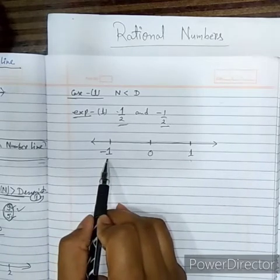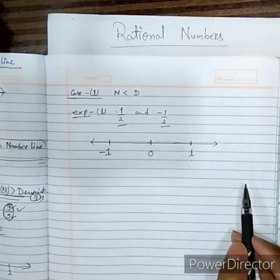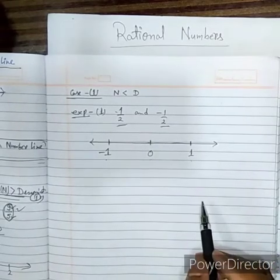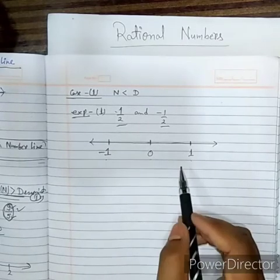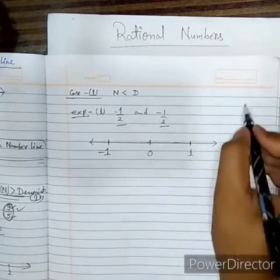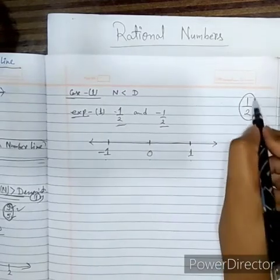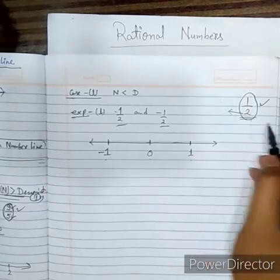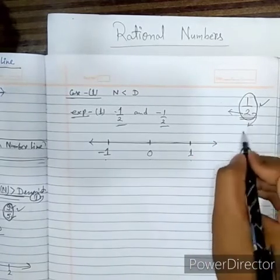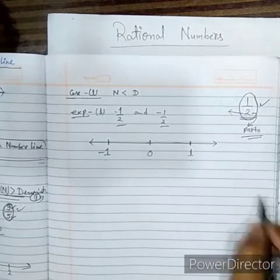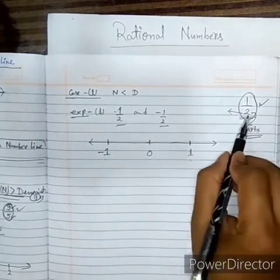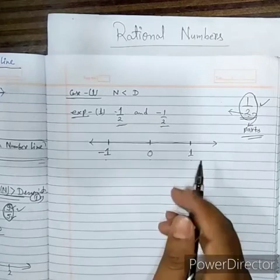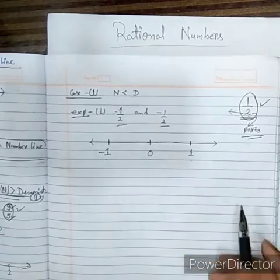How many parts do we have to draw? It depends on the denominator. The denominator tells the number of parts. Since the denominator here is 2, we have to divide the segment from 0 to 1 into 2 equal parts.